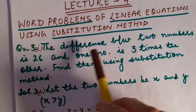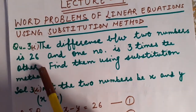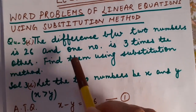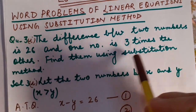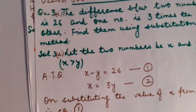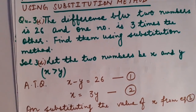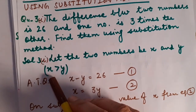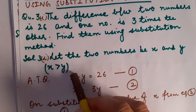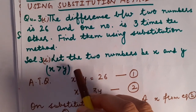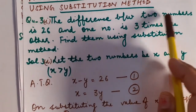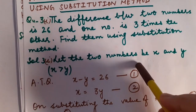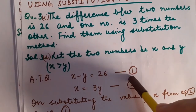The difference between two numbers is 26 and one number is three times the other. Find them using substitution method. So, let two numbers be X and Y, where X is greater than Y. Why? Because the difference between two numbers is given, which is 26, so definitely one number will be greater than the other. Then and only then you can take the difference.